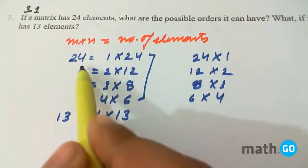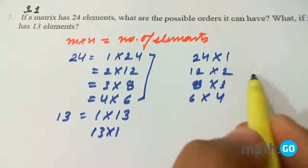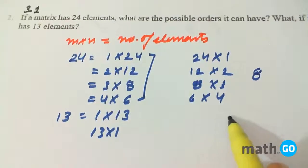So, for the 24 elements, we have 8 orders and with that of 13, we have 2 orders.